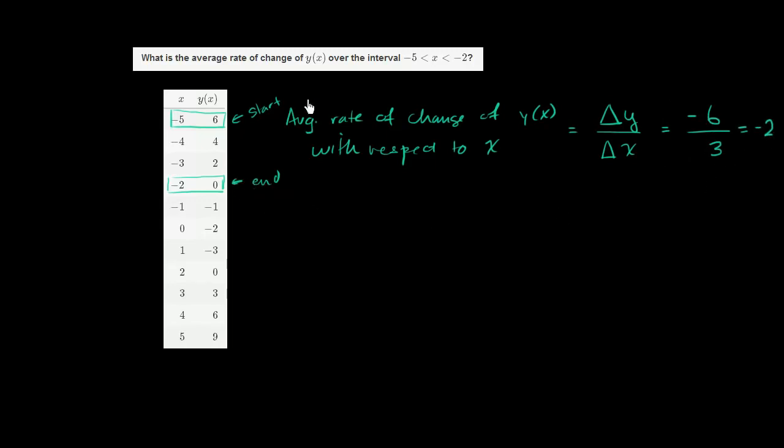So our average rate of change of y of x over the interval from negative 5 to negative 2 is negative 2. Every time, on average, x increased 1, y went down by 2.